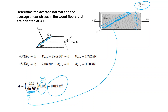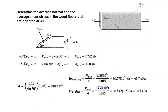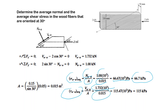The area of the cut surface is 0.015 square meters. The average normal stress is the normal force divided by this area, giving 66.7 kilopascals. The average shear stress is the shear force divided by the same area, giving 111 kilopascals.